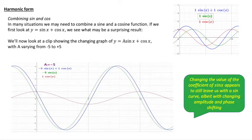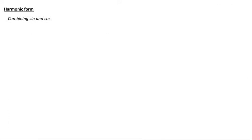So, changing the value of the coefficient of sine x appears to leave us with the sine curve, albeit with changing amplitude, and that's how big the peaks are and troughs, and phase shifting means essentially how far from x equals 0 or x equals pi by 2 the peaks and troughs are.